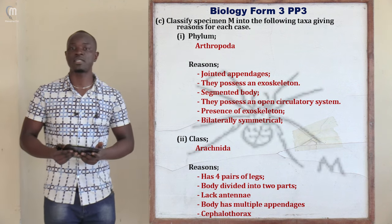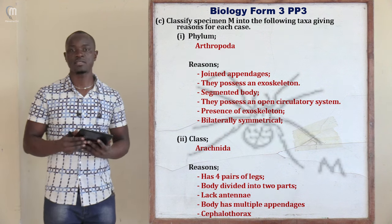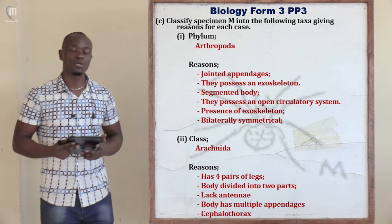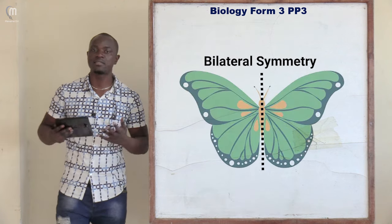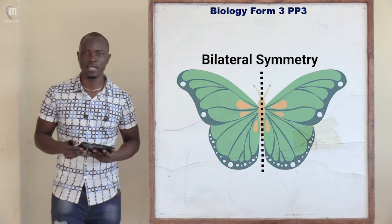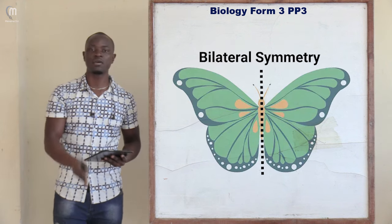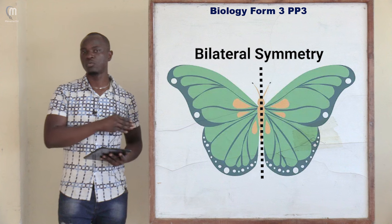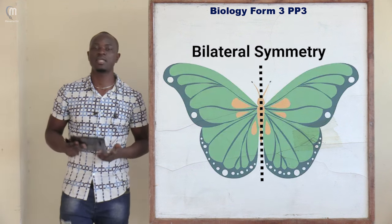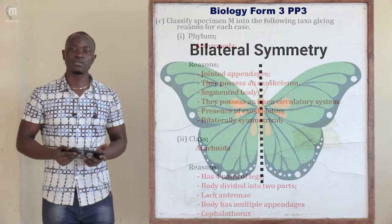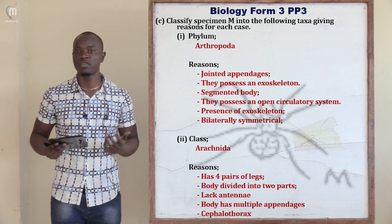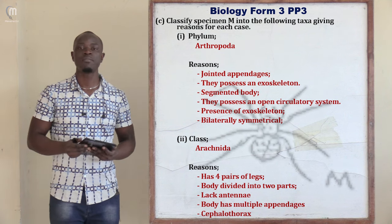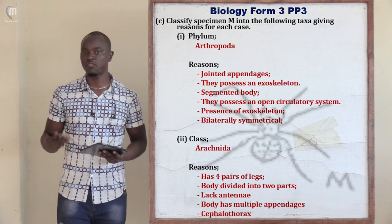Additional reasons for placing specimen M in phylum Arthropoda: it has a segmented body (head and cephalothorax), it possesses an exoskeleton, its body is bilaterally symmetrical — meaning a longitudinal section produces a left side identical to the right side — and it possesses an open circulatory system.